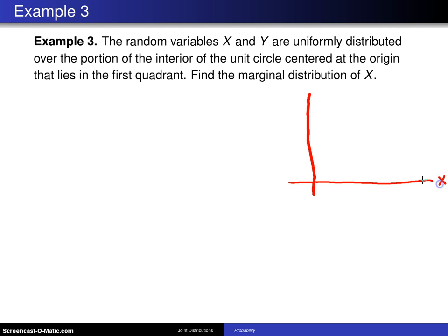Start with a picture. Here is x and here is y. The portion of the unit circle that lies in the first quadrant is given right here. So that is script A and that is the support of the random variables x and y.